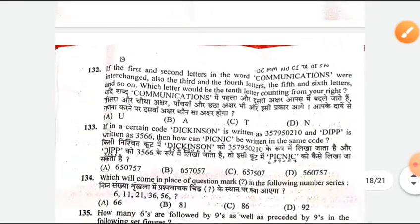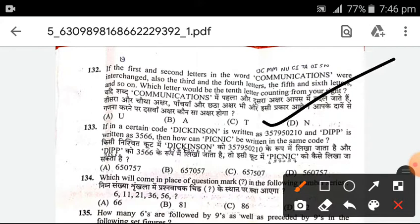If the first and second letters in the word COMMUNICATIONS were interchanged, also the third and fourth letters, fifth and sixth letters, and so on — which letter would be the tenth letter counting from the right? The answer is D — N will be the tenth letter.